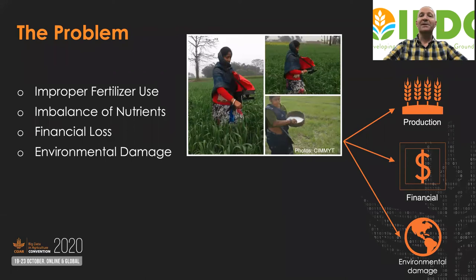More than 50% of fertilizers applied, especially nitrogen, are not used by the crops. It's fair to say the majority of farmers choose not to use fertilizers or fail to use them properly, and sometimes apply more than necessary, particularly nitrogen, resulting in a poor nutritional balance.